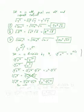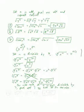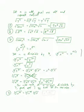For cube roots, if n is not divisible by 3, peel off 1 or 2 of the variable. For example, the cube root of x to the tenth: x to the ninth is divisible by 3, so I peel one off and write this as the cube root of x to the ninth times the cube root of x. That gives me x cubed times the cube root of x. Try to write your 3 clearly so it's obvious which is the power and which is the index of the root.